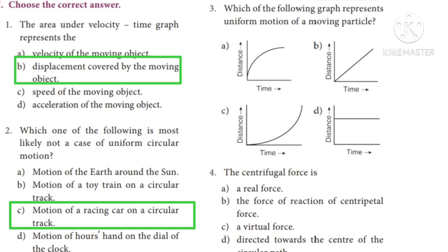Third question: Which of the following graph represents uniform motion of a moving particle? The correct answer is Option B.